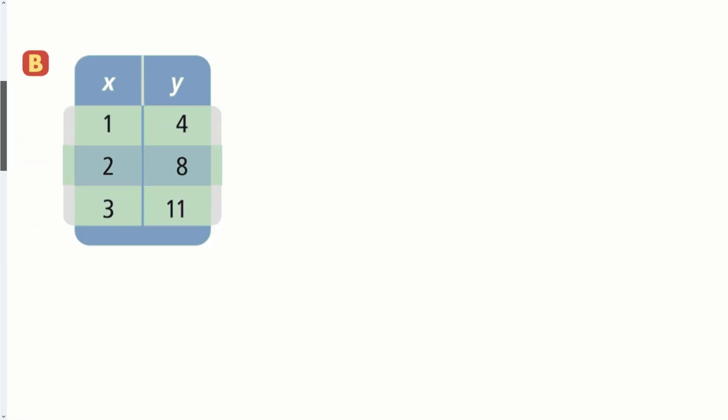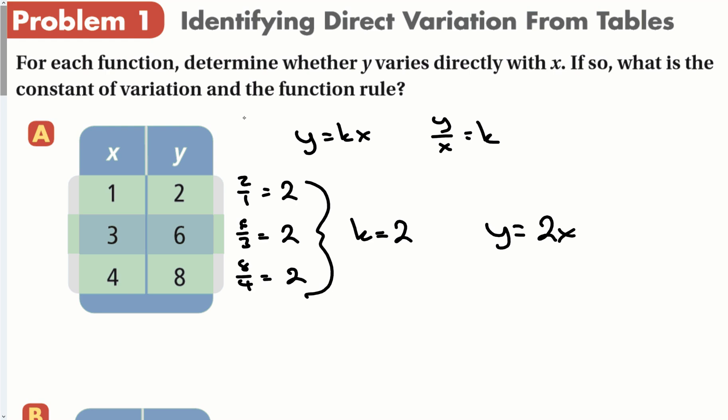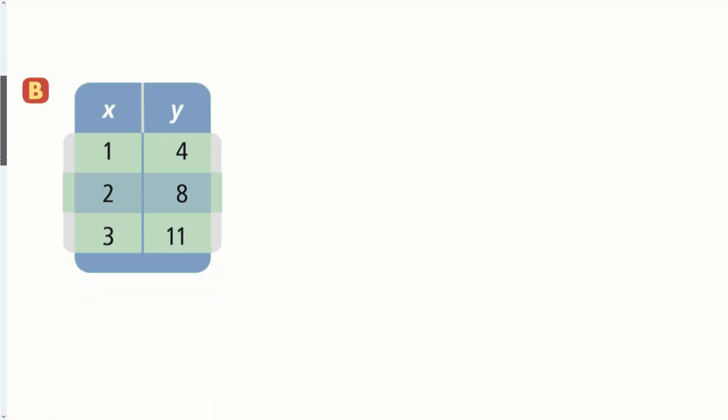If I look at this problem, y over x should equal k. That one's 4, that one's 4, but that one is not 4. So this is not direct variation.